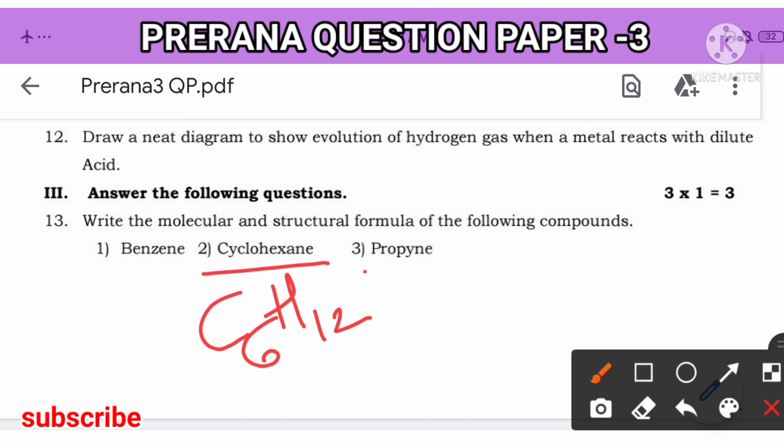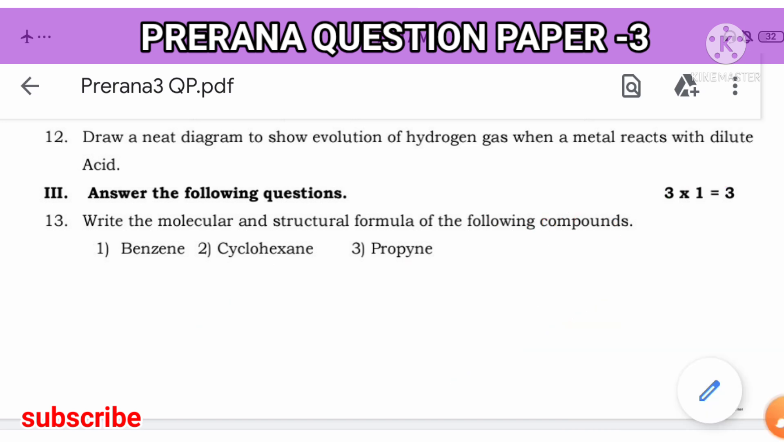Next, propyne. Propyne is alkyne. It is C3. 2 into 3 is 6 minus 2 is 4. C3H4 is propyne formula. Because general formula is CNH2N minus 2. Here N value is 3. C3. So, 2 into 3 is 6 minus 2 is 4. So, propyne formula. For this you should write, structural formula also you should write.